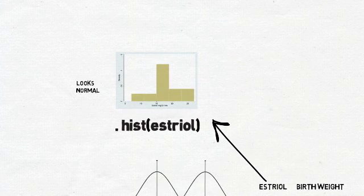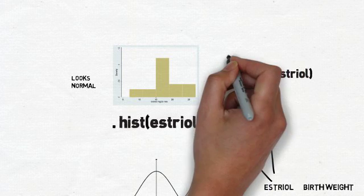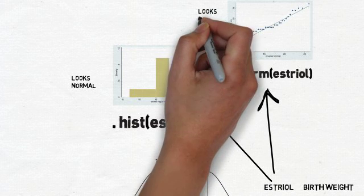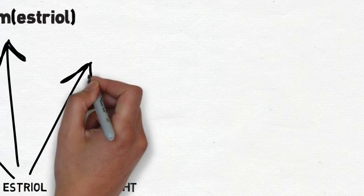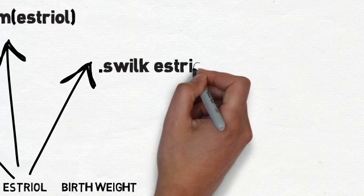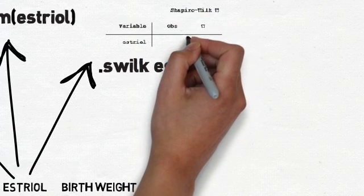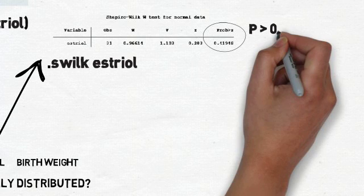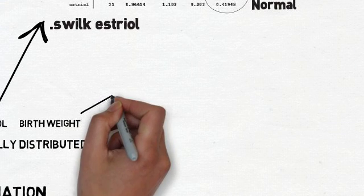Next, we plot the data points to see if they follow a pattern. We create a scatter plot using the Stata command 'qnorm esterol'. Each dot represents a data point, and they all seem to be headed in the same direction — if you drew a line down the middle, you would see a clear pattern. One last check: we'll use the Shapiro-Wilk test for normal data with the command 'swilk esterol'. That gives us a chart, and the p-value is larger than 0.05, so we can say that the estriol variable is normally distributed. We've confirmed that the estriol variable is normal by all three tests.